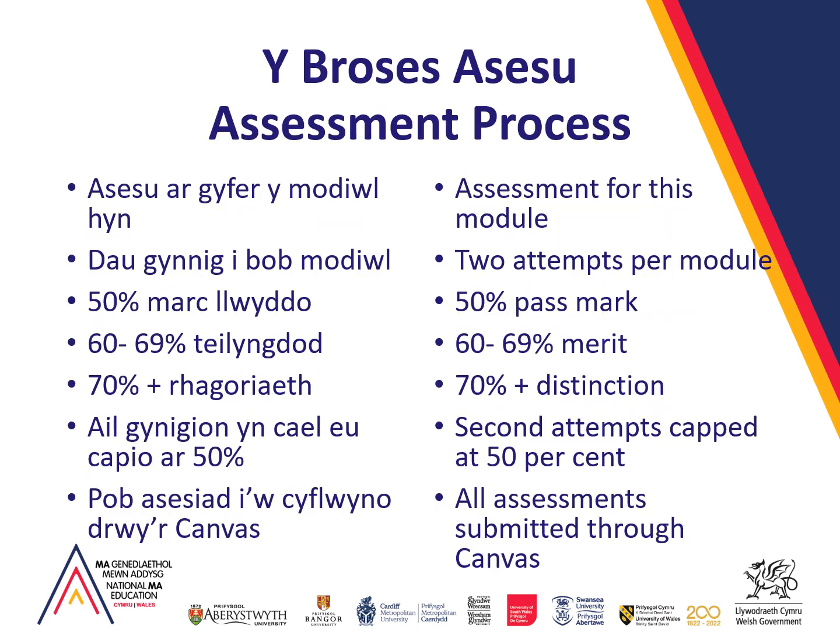In terms of the assessment process, everyone on the module will have up to two attempts to pass. A 50% mark is a pass; 50 to 59 is in the pass boundary, 60 to 69 is a merit, and anything over 70 is classed as a distinction. If your assignment does not pass at its first attempt, you would have a second attempt; however, regardless of what the assignment would have scored, it would be capped at a maximum of 50. All assignments will be submitted through Canvas to Swansea University.